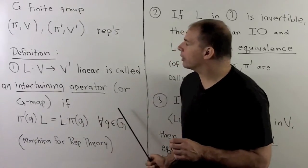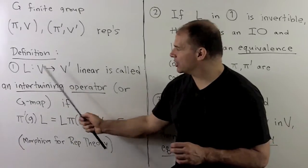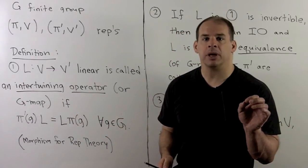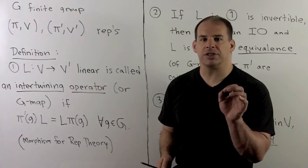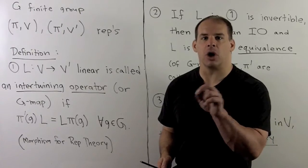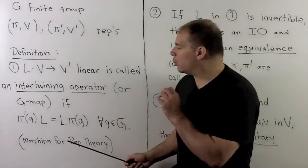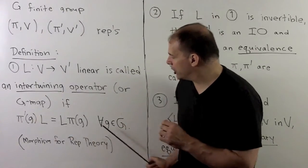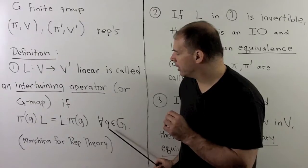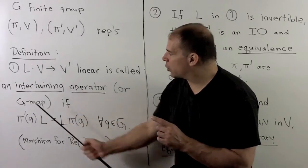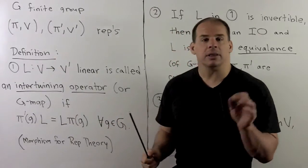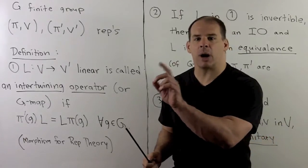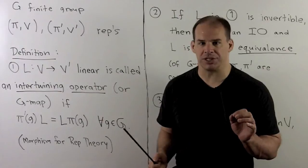What's happening here is that L is linear, so L preserves the vector space structure. But because we have representations, there are going to be G-actions on both vector spaces, and we want L to preserve the G-actions. That's what this equation says. The way to think of an intertwining operator: these are going to be the morphisms for representation theory, carrying representations to other representations.